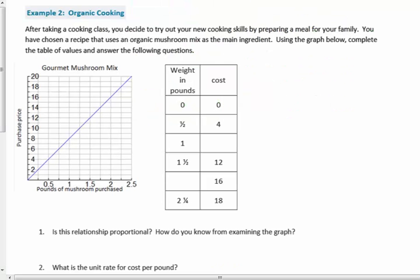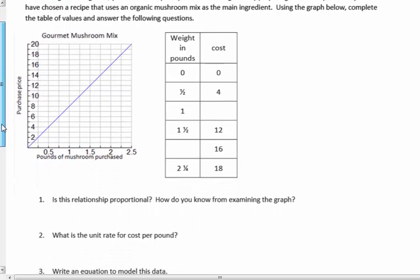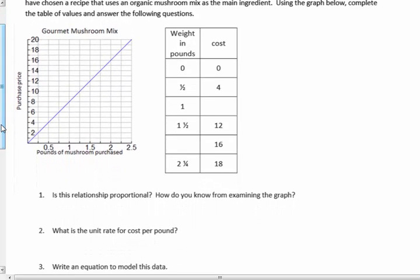Example 2. After taking a cooking class, you decide to try out your new cooking skills by preparing a meal for your family. You have chosen a recipe that uses an organic mushroom mix as the main ingredient. Using the graph below, complete the table of values and answer the following questions.